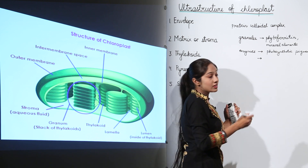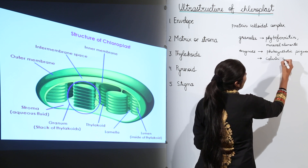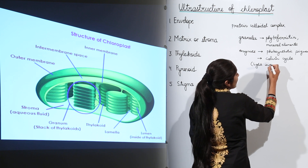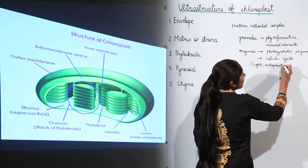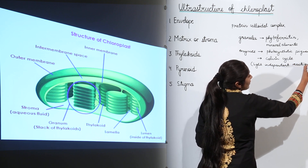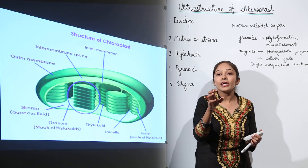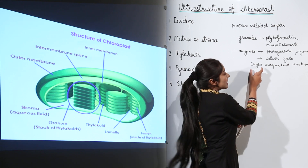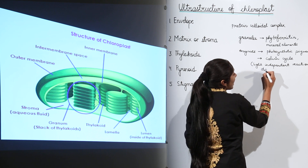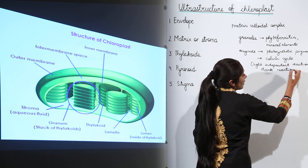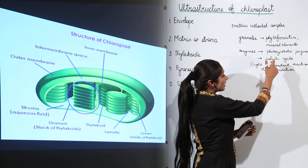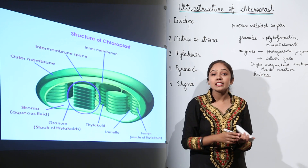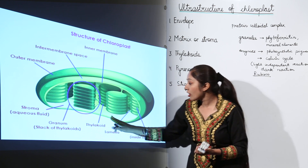The next very important function the enzymes perform is operating the Calvin cycle. This Calvin cycle involves light-independent reaction, meaning photosynthesis takes place and food is manufactured in the plant independent of light. This reaction is called the light-independent reaction, and sometimes also called the dark reaction. The key enzyme of this Calvin cycle or dark reaction is rubisco, and this enzyme is present in the stroma or matrix of the chloroplast.